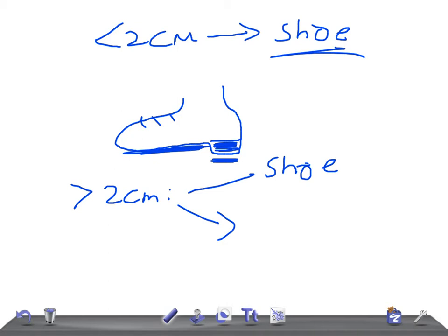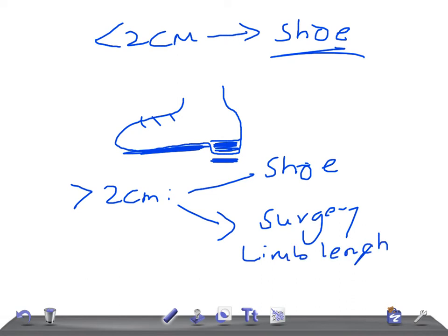In younger patients, you can do surgery like corrective angulation or overlap by operative methods — a limb length equalization procedure. This can be done in healed, remodeled, old fractures. So this is a brief discussion — thank you so much for watching.